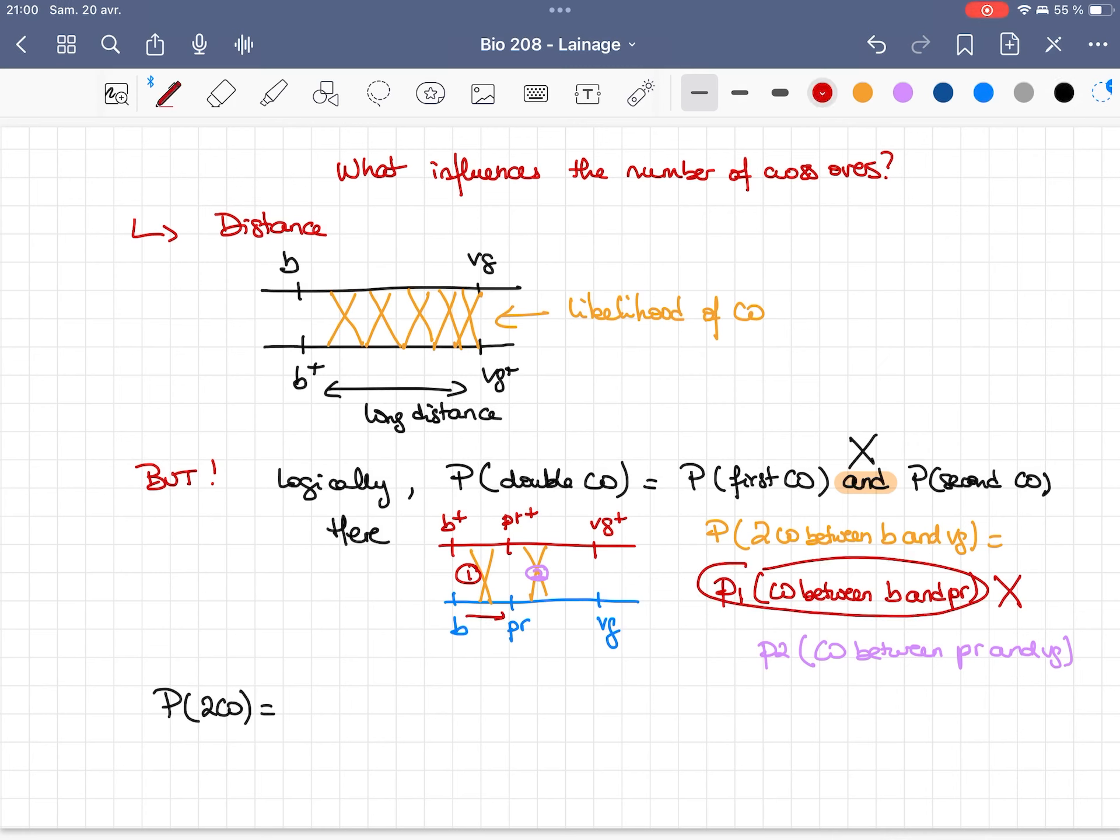So if we do it, the probability of the first crossing-over is 6% or 0.06 because we have six centimorgans. The probability of the second crossing-over is 12.3%, so it is 0.123. So if you multiply those two probabilities, it will give you a whole overall probability of double crossing-over of 0.0074.